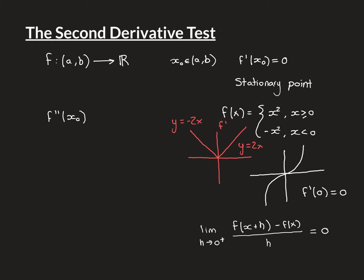To illustrate that this function has no second derivative at x = 0, we plot f′ against the real numbers. For positive x, differentiating x² gives f′ = 2x. For negative x, differentiating minus x² gives f′ = −2x. At x = 0, f′ = 0. When plotted, this produces a corner at the origin — the line 2x on the right and −2x on the left. Since f′ is not differentiable at x = 0, the second derivative does not exist there.